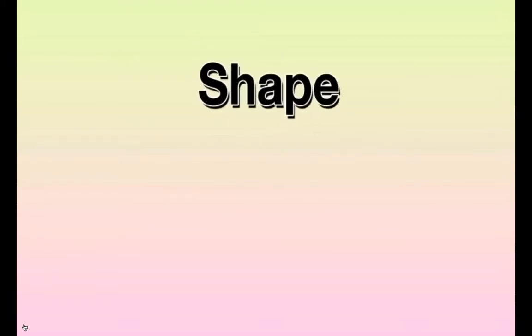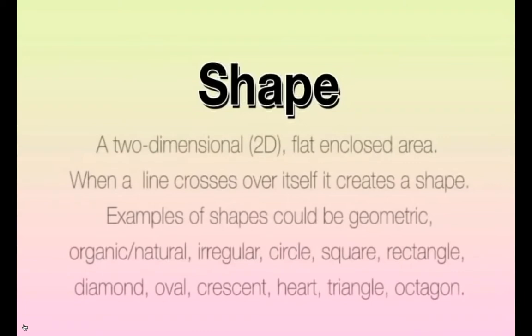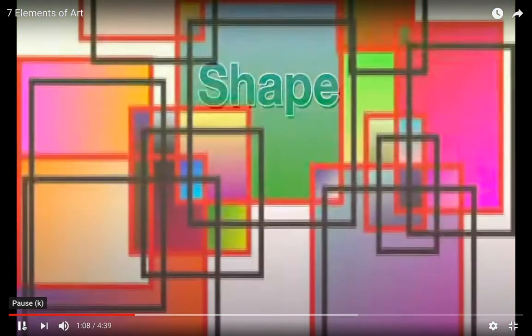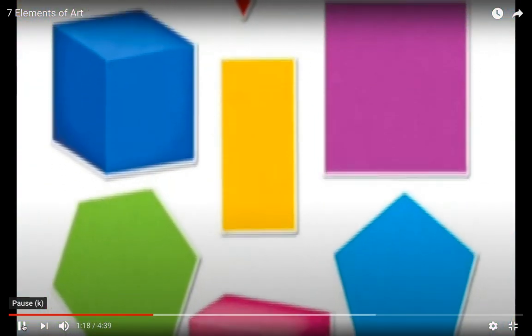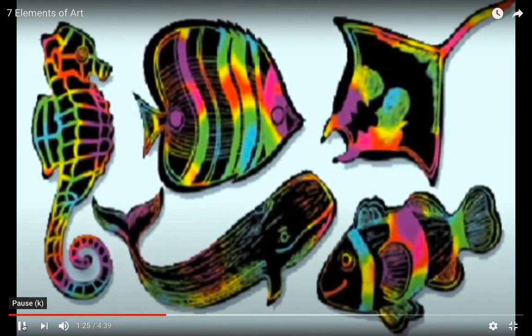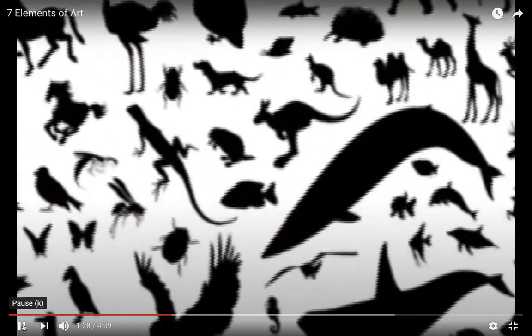Shape. A two-dimensional flat enclosed area. When a line crosses over itself, it creates a shape. Examples of shapes could be geometric, organic, natural, irregular, circle, square, rectangle, diamond, oval, crescent, heart, triangle, and octagon. So in the painting that you choose, your next job is to examine the different shapes that you see and write about them.